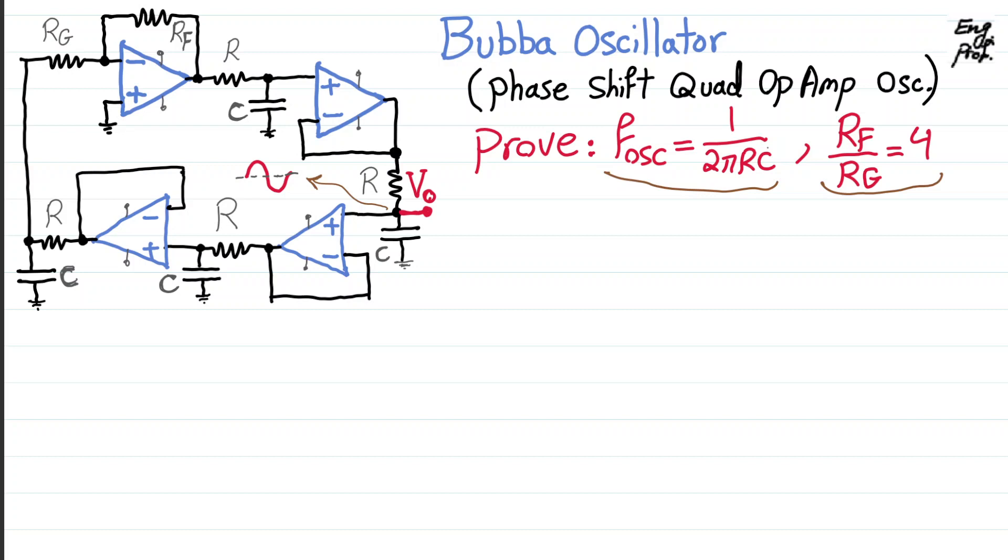At the same time, we want to investigate the loop gain, meaning that when we start from V_out and we traverse through the whole circuit back to V_out, what is the loop gain in order to have a stable oscillation? Okay, so let's start.